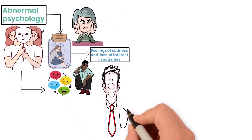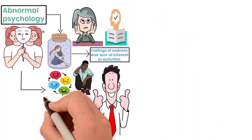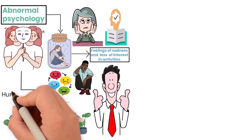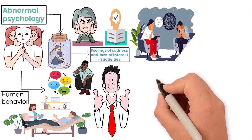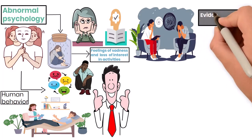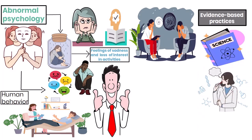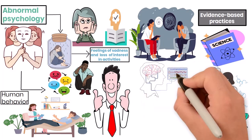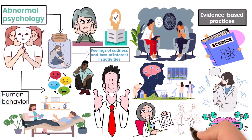Let's look at two key strengths of abnormal psychology. The first strength is its comprehensive approach to understanding mental health. By examining a wide range of behaviors and conditions, abnormal psychology provides a deep and broad understanding of human behavior. This comprehensive perspective helps in identifying the underlying causes of mental health issues, leading to more effective treatments and interventions. Another strength is its focus on evidence-based practices. Abnormal psychology relies heavily on scientific research and clinical studies to understand and treat mental health conditions. This emphasis on empirical evidence ensures that the methods used are based on solid research, increasing the likelihood of successful outcomes for individuals receiving treatment.